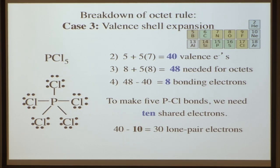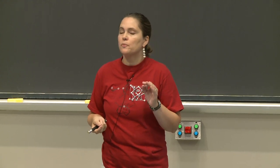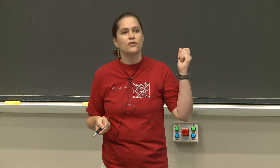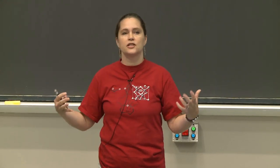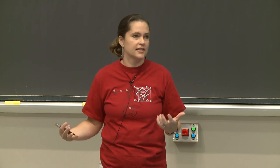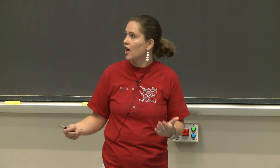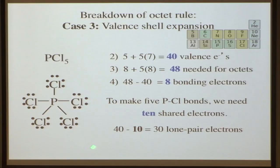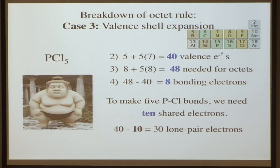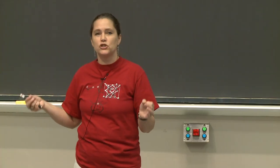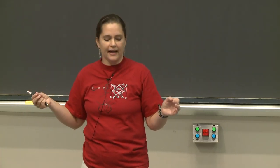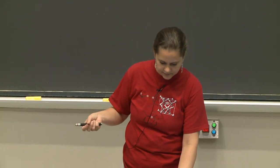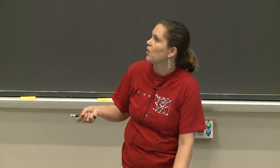The bottom line is: certain elements can be expanded — they can have more than an octet, like five bonds for phosphorus. Others, like carbon, cannot have five bonds. You have to think about what expansion would do and whether it's allowed for that element.